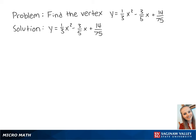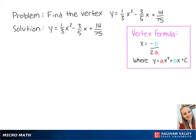To find the vertex, we can use the vertex formula. For this equation, our a is equal to one-third and b is equal to negative three-fifths.